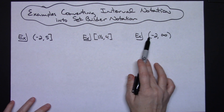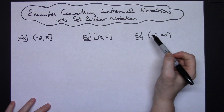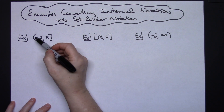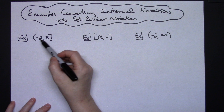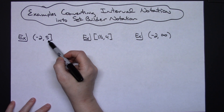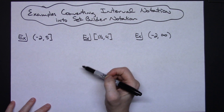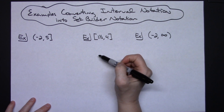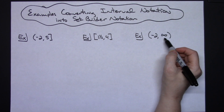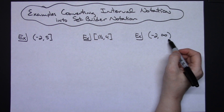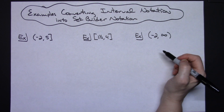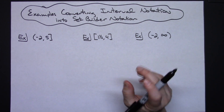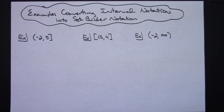When you see curvy brackets, the number — like negative 2 here — is not included in the interval. With a square bracket, the number — like 5 — is included. With both square brackets, like 1 and a half and 4, both endpoints are included. You will always find curvy brackets around infinity or negative infinity. That's a quick summary of interval notation before we convert these into set builder notation.